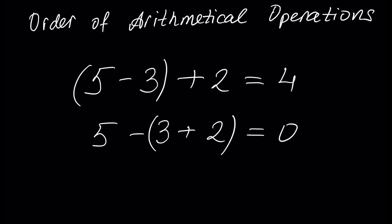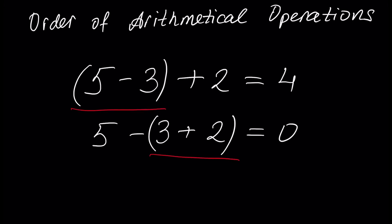As we can see from these two examples, order of arithmetical operations is very important because in the first example we perform 5 minus 3, and in the second example first we perform 3 plus 2. That's why the result of the first example is 4, whereas the result of the second example is 0. That's why the order of operations, in this case defined by brackets, is important.